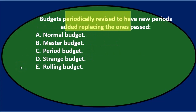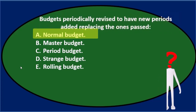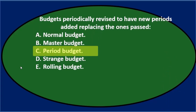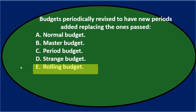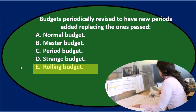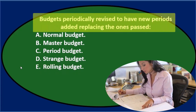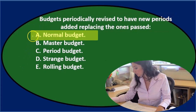Next question: budgets periodically revised to have new periods added, replacing the ones past. The options are: A) normal budget, B) master budget, C) period budget, D) strange budget, and E) rolling budget. Let's go through this using the process of elimination. Budgets periodically revised to have new periods added, replacing the ones past — A says normal budget; that doesn't seem totally accurate, but I'll keep it for now.